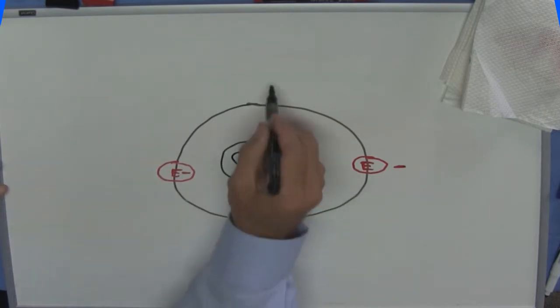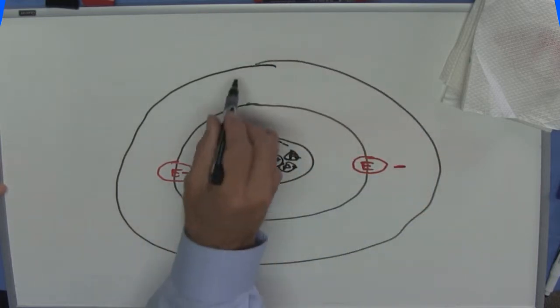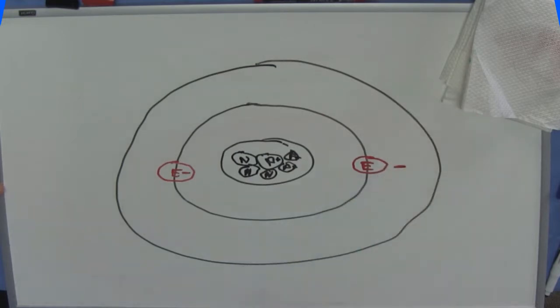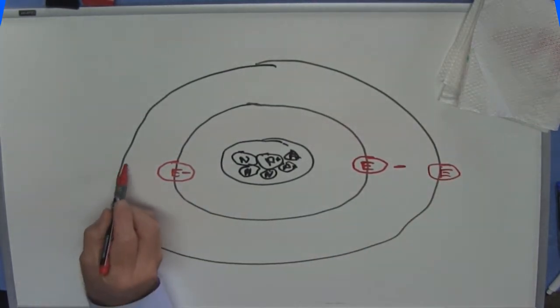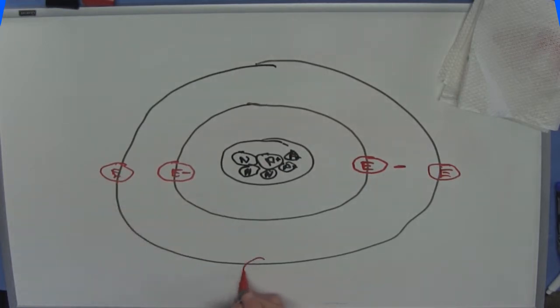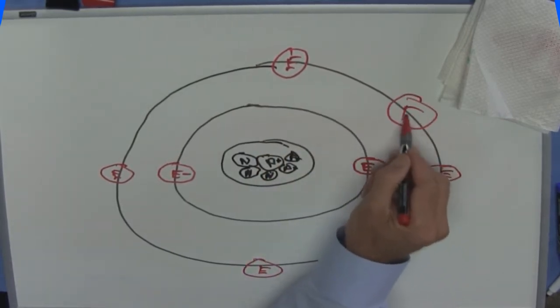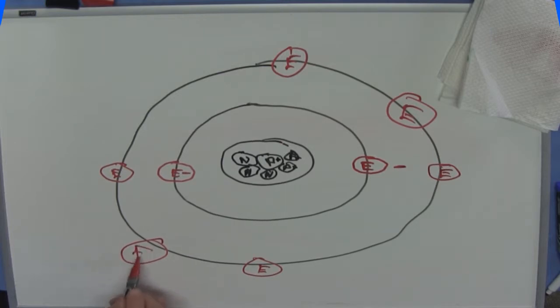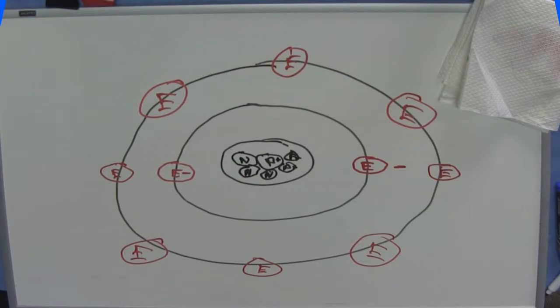Let me show you how this works. Then we have another shell. Now, on your second shell, and every subsequent shell, you can have a maximum of eight electrons. So, I'm going to have an electron here, electron here, electron here, an electron here. Here, I got four, five, six, seven, eight. That's all you can have. It can't hold any more.